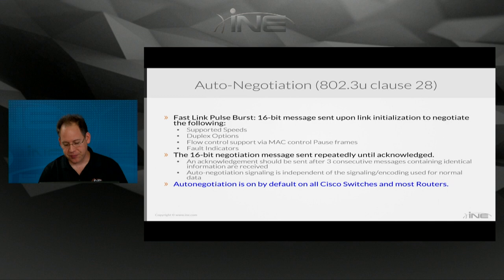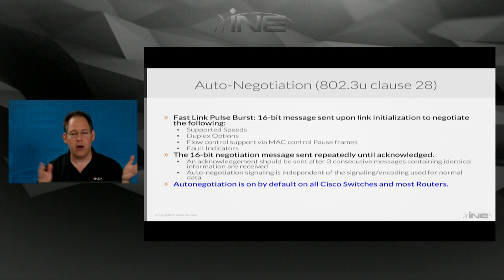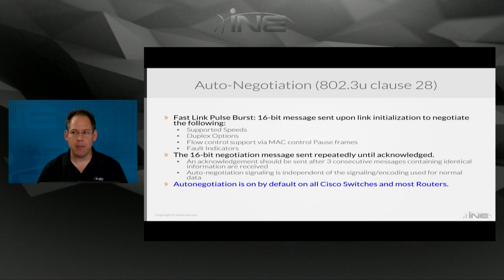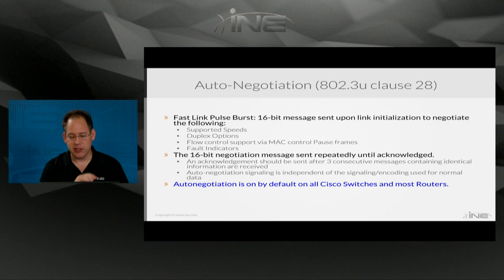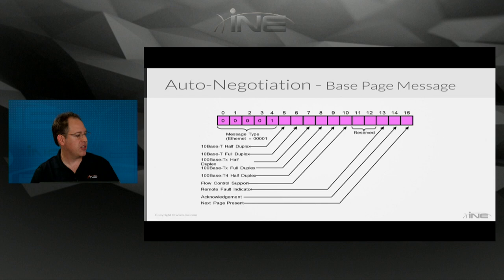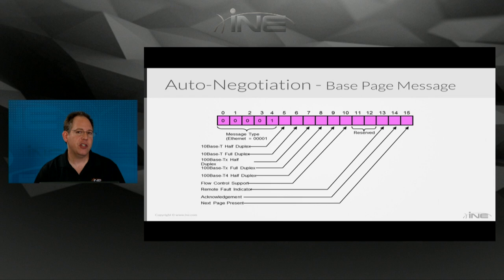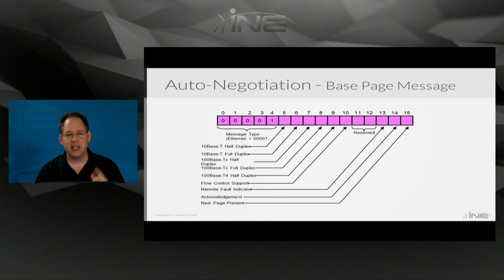Auto-negotiation is on pretty much everything today. Any NIC card in a laptop, PC, router, or switch is at minimum going to be a 10/100 NIC card, and many are 10/100/1000. They negotiate by sending out this Fast Link Pulse message. The 16-bit message has the first five bits reserved as 0-0-0-0-1, and the remaining bits indicate supported speed and duplex. If you're using a gigabit adapter, it uses the 15th bit — set to one — to indicate there's a next page present with more auto-negotiation bits to follow.